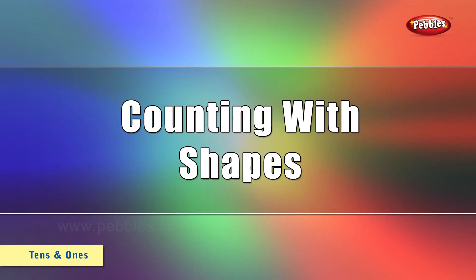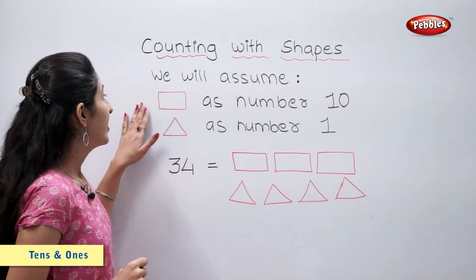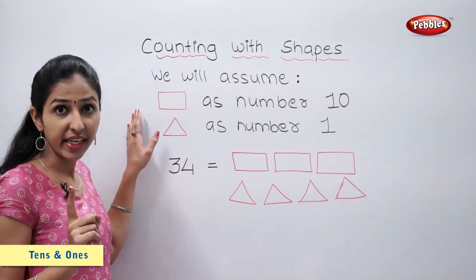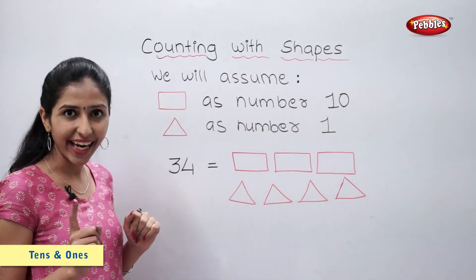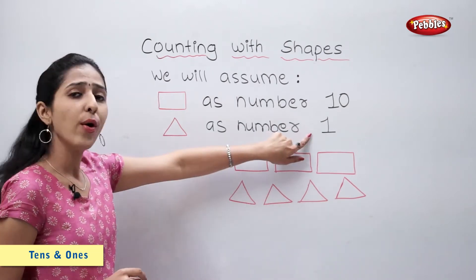Counting with shapes. Students, now we will assume this rectangle represents number 10 and this triangle represents number 1.